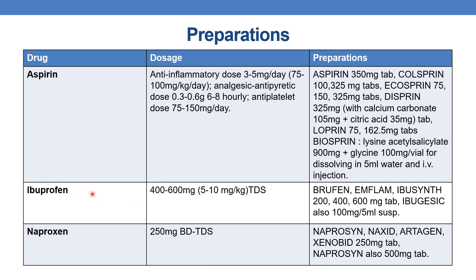The next drug is ibuprofen. The dose is 400–600 mg or 5–10 mg per kg twice or thrice a day. Marketed preparations are Brufen, Emflam, and Ibuprofen, available in 200, 400, and 600 mg tablets, and also available as 100 mg per 5 ml suspension.